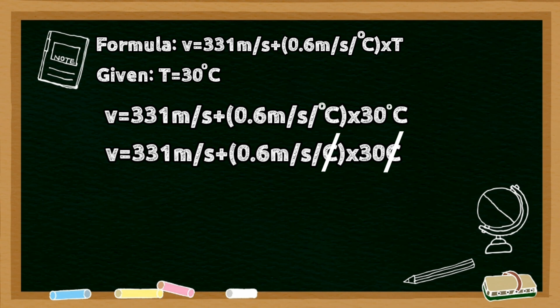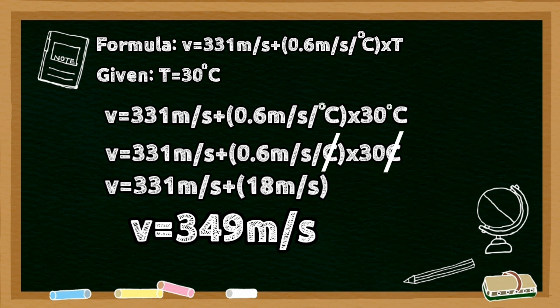We need to multiply 30 and 0.6 and add the product to 331. The answer is 349 meters per second. That is our velocity.